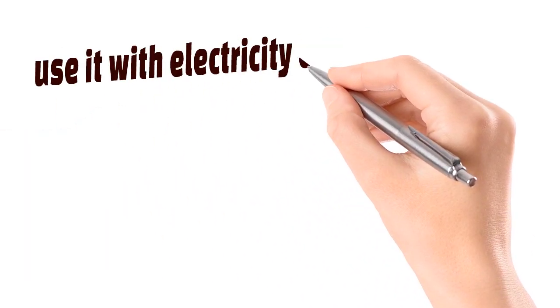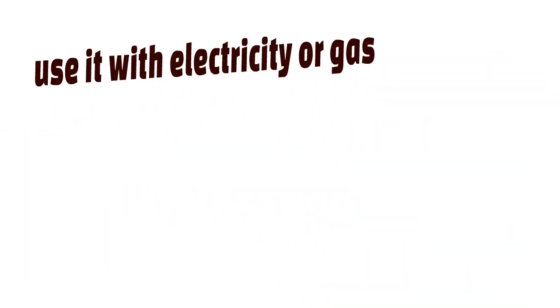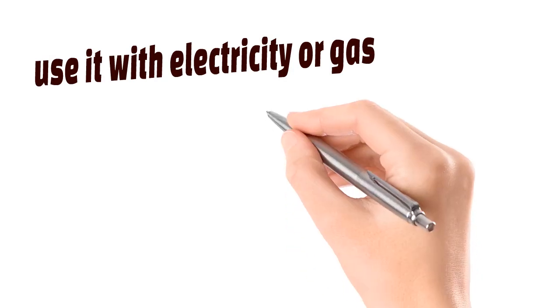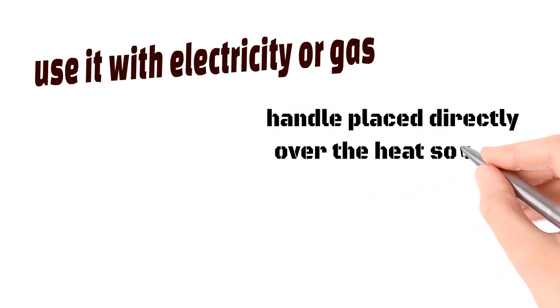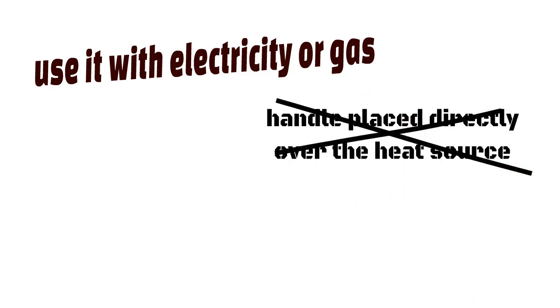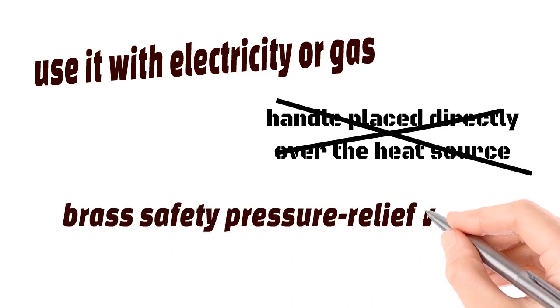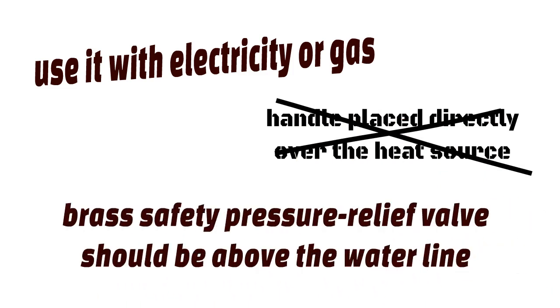You can use it with electricity or gas. Make sure the handle isn't placed directly over the heat source and keep the setting on medium to low for best results. Don't overfill the water reservoir either. The brass safety pressure relief valve should be above the water line. If you obey these simple guidelines then you should have excellent results with the Roma.